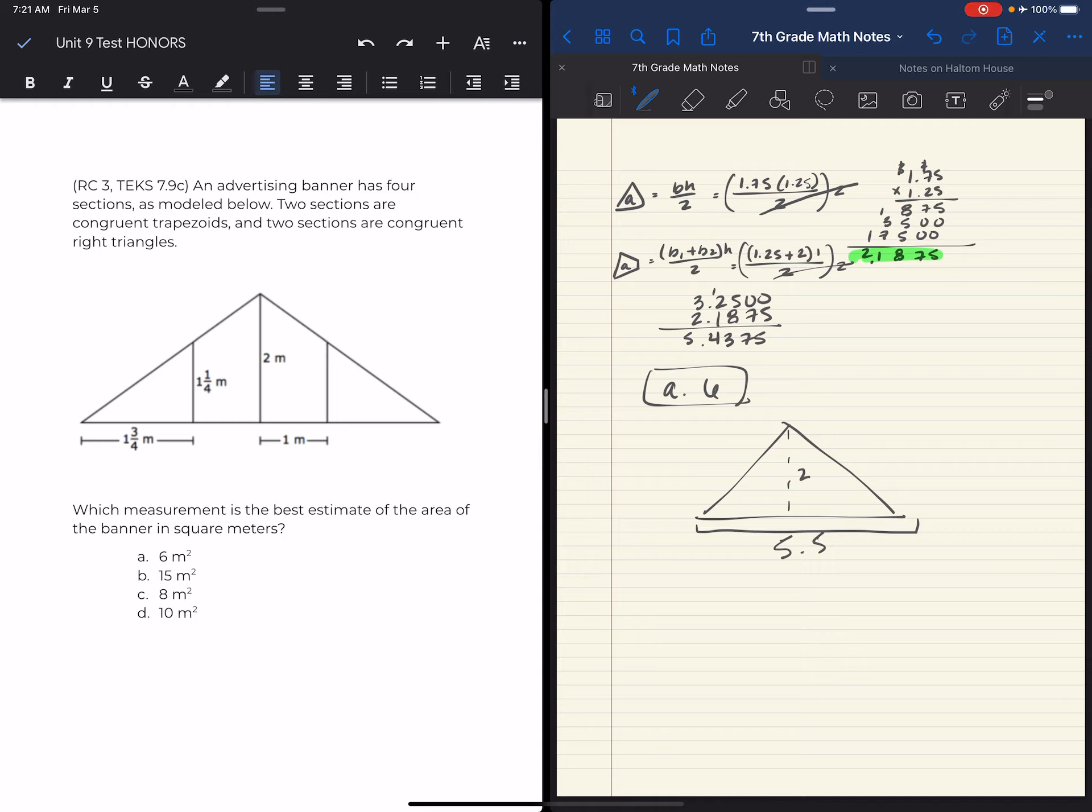So I could have done base times height divided by two, which is five and a half times two divided by two. Those cancel each other out. So I'm still getting 5.5 as my answer, which still gives me six to be the best estimate of the area of the banner in square meters.